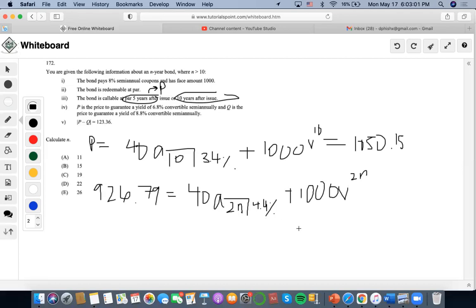Let's use the TVM calculator. I input 926.79 as the present value, 40 as the payment, 4.4 as the interest rate, 1,000 as the future value, and compute the number of periods. I get that the number of periods is 38.